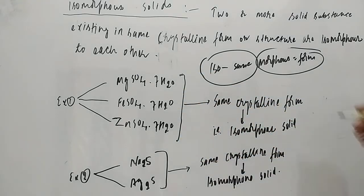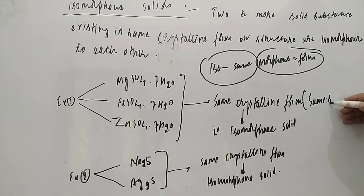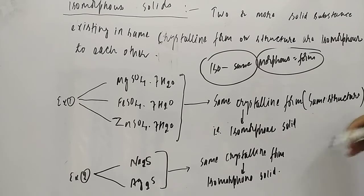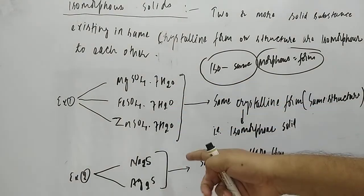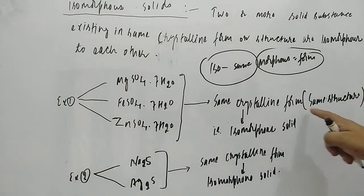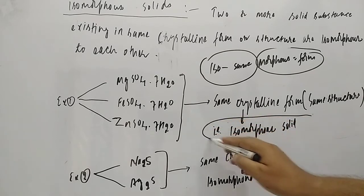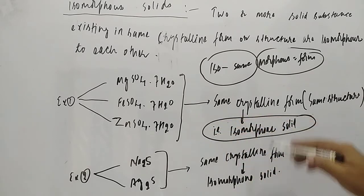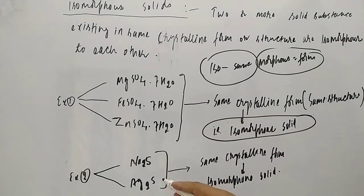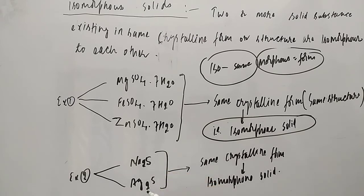These three — MgSO₄·7H₂O, FeSO₄·7H₂O, and ZnSO₄·7H₂O — all have the same crystalline form, the same structure. Because they are more than two solids and they all have the same structure, they are known as isomorphous solids.